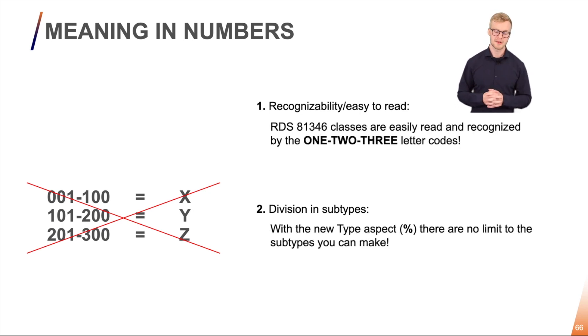Well, both of these things are actually fixed in the new standard. We get the recognizability and readability from the 1, 2 and 3 data codes. I always know if I'm speaking about a main system, a technical system or a component system.